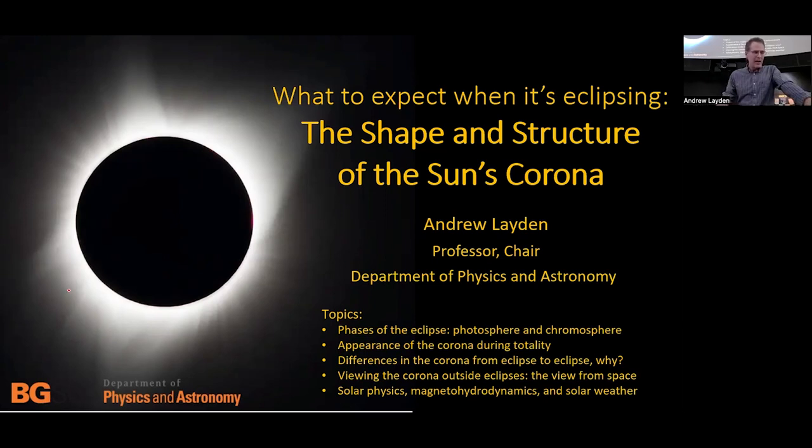I wanted to share the experiences that I've had and help you understand what to expect when it's eclipsing. In particular, I want to share my thoughts, my predictions, about the shape and structure of this ghostly, pearlescent white corona that always surrounds the sun. Most of the time you don't get to see it because the bright surface of the sun washes it out.